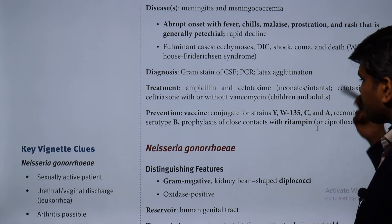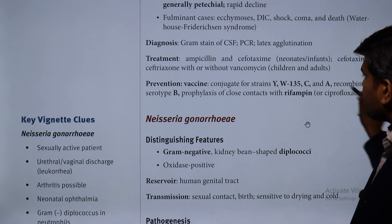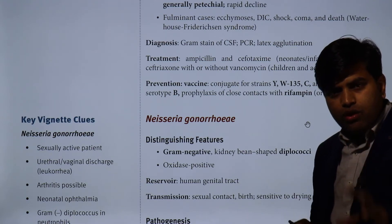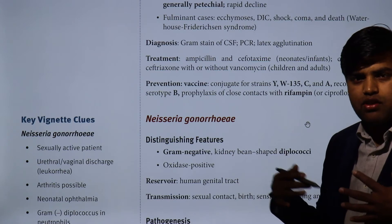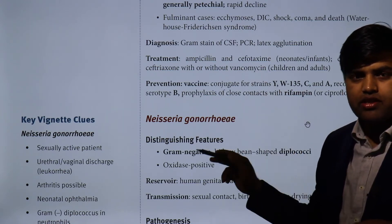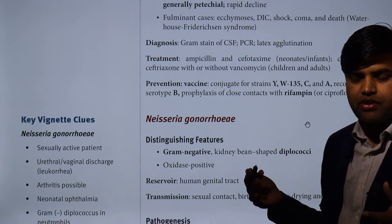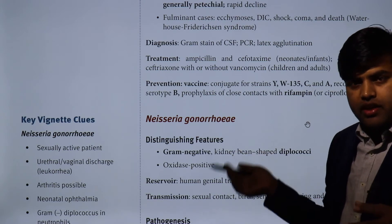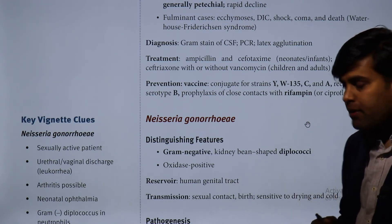Treatment: ampicillin and ceftriaxone for neonates; cefotaxime and ceftriaxone with or without vancomycin for children and adults. A conjugate vaccine is available for serogroups Y, W135, C, and A, and a recombinant vaccine exists for some serogroup B strains. Prophylaxis for close contacts with rifampin or ciprofloxacin is important — anyone exposed to a N. meningitidis patient should take prophylaxis since it is easily transmitted and can cause the deadly Waterhouse-Friderichsen syndrome.